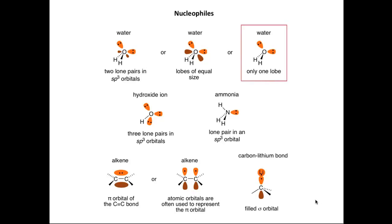For another nucleophile, we have an organometallic — a carbon-lithium bond, which is a covalent bond. Here you can see the interaction of the s-orbital of lithium with the p-orbital on carbon. It is this filled sigma orbital which is the nucleophilic site in an organolithium compound.